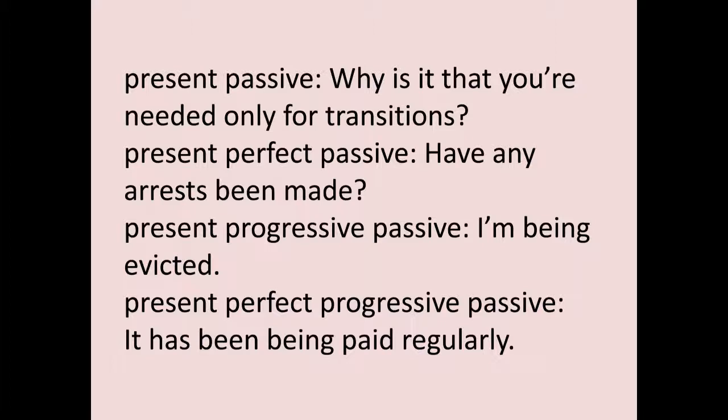We can also switch on other options. For example, switching on perfect: 'Have any arrests been made?' — auxiliary 'have' (perfect), then 'been' (auxiliary be for passive), and 'made' (past participle, passive). So this clause is passive and perfect. Because 'have' is present tense, it's present perfect passive.